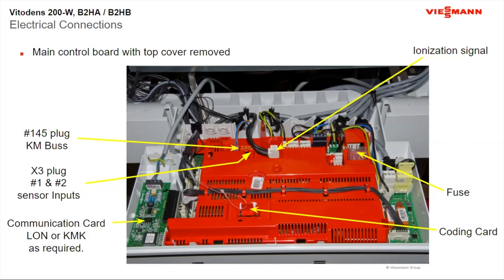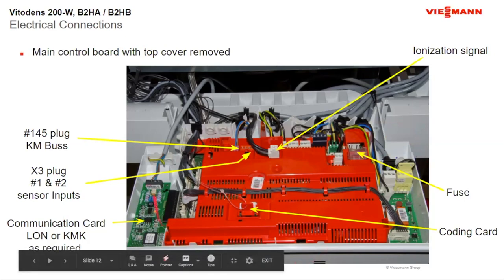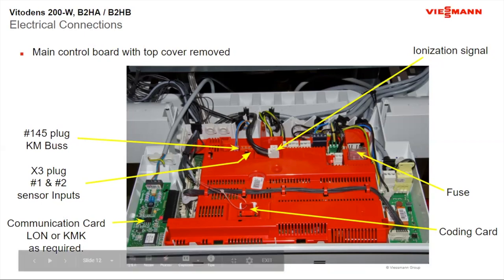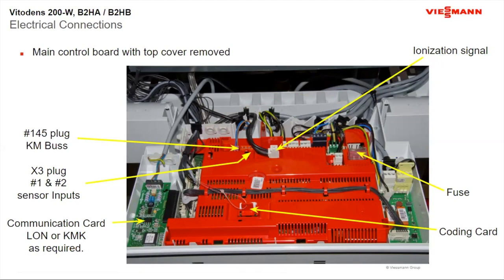Those sensors go to an orange plug. Right inside the control box there is a fuse — in the center of that plastic piece is a spare fuse. If you let the smoke out of the box, there's a spare fuse right there. Over here you would put your LON card. In this picture it shows KMK — that's Viessmann's communication protocol, used for thermostat-to-boiler and boiler-to-boiler communication on multiple boiler setups. Most systems now use LON communication for building management. We also offer a LON class as well as a multi-boiler hookup class.